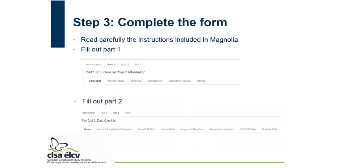Step three is to complete the form. There are four tabs: instructions, part one, part two, and part three. I always insist that you need to read carefully the instructions written there. It also has links to different resources on the CLSA website. The more you know CLSA, the higher the chances your application will be accepted.